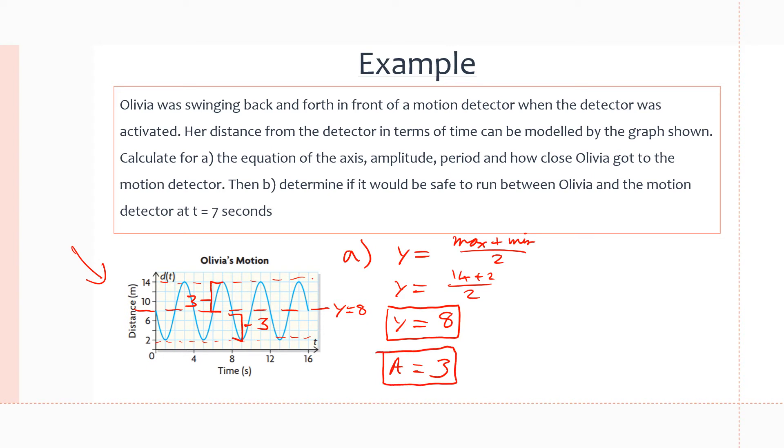Next, we want the period. The period is the time passed as Olivia swings back and forth once. Let's say she starts away from the motion detector, swings towards it, and goes right back to where she started, which is the farthest point from the motion detector. This distance is from 11 to 15, so it takes her 15 minus 11 equals 4 seconds to do one swing. One cycle of her motion is 4 seconds, so that's our period, 4 seconds.